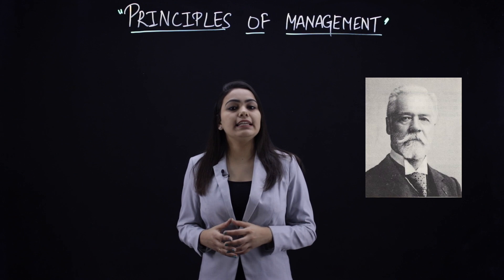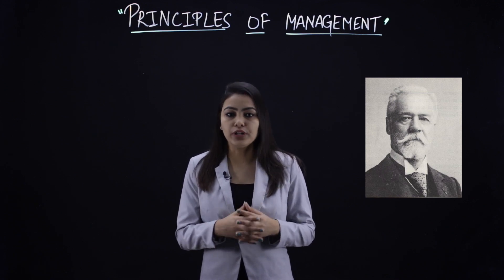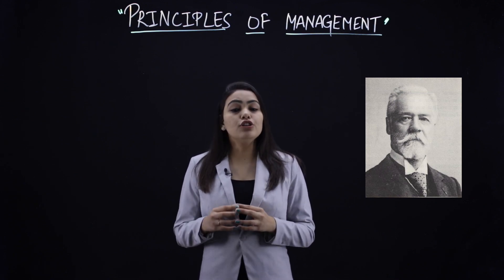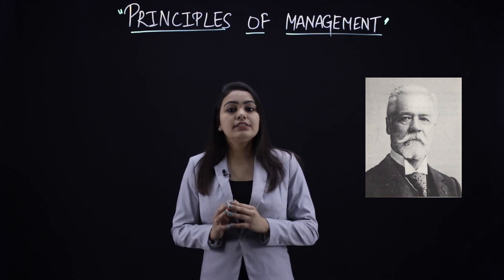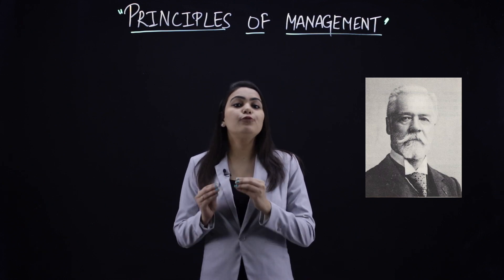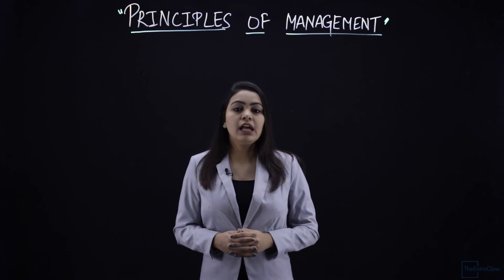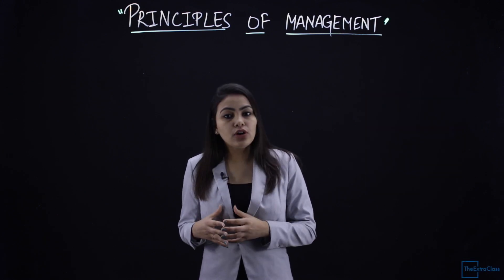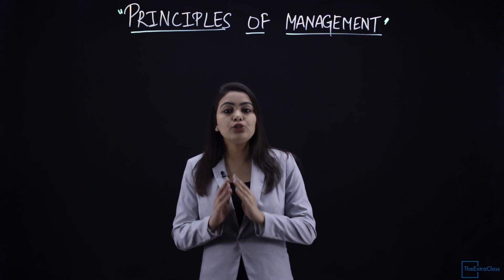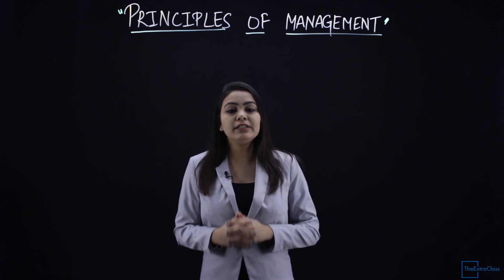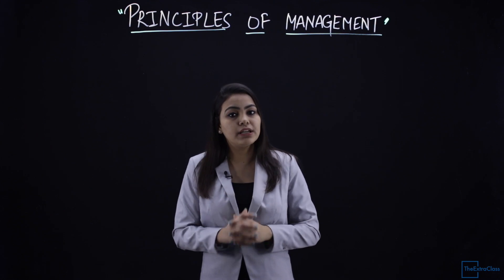Henry Fayol was basically a mining engineer and a management theorist who gave 14 principles of management. He is known as the father of general management. He was also the first one to identify the functions of management — that is planning, organizing, directing and controlling.